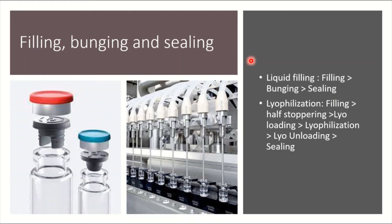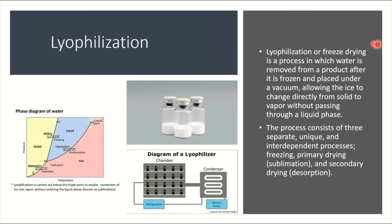Lyophilization — also called freeze drying — is a process where water is removed from a product after it is frozen, placed under vacuum, and the ice changes directly from solid to vapor without passing through a liquid phase. This process consists of three unique and independent stages: freezing, where the solution is frozen; primary drying, which is sublimation where evaporation occurs from the solid surface; and secondary drying, where interstitial water evaporates — called desorption.